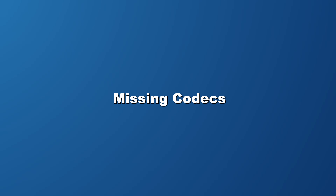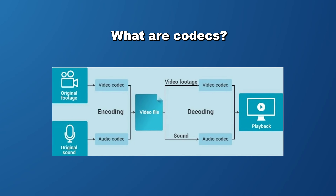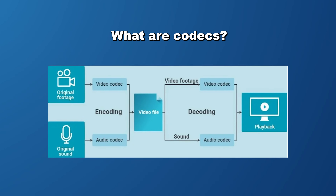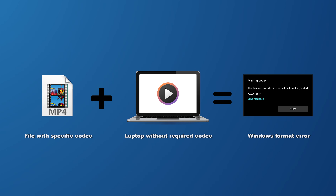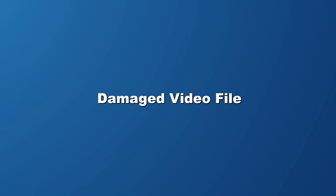For starters, the media player might not support the format of the video that you are trying to play. Missing codecs can also be another reason for this error. Codecs are the parts that help encode or decode data present in a file. If some of the codecs are missing, then the media player cannot read the file itself and will give the Windows video format error. Sometimes a video file may even be damaged or corrupted, and in such a situation it just won't be played.